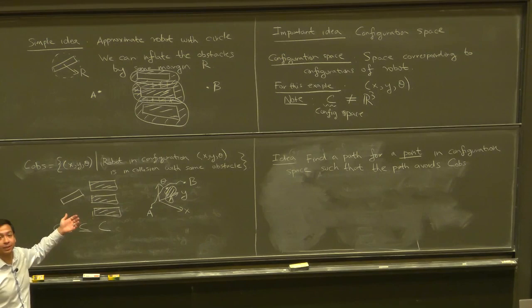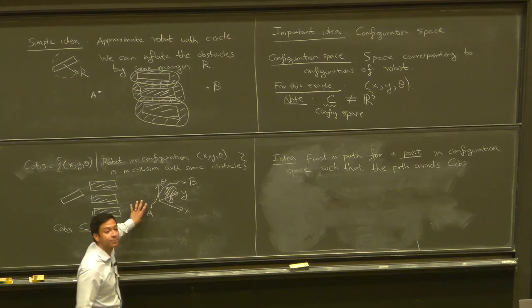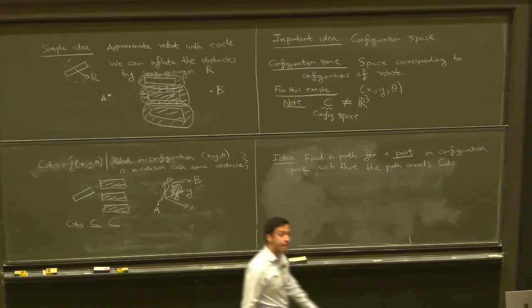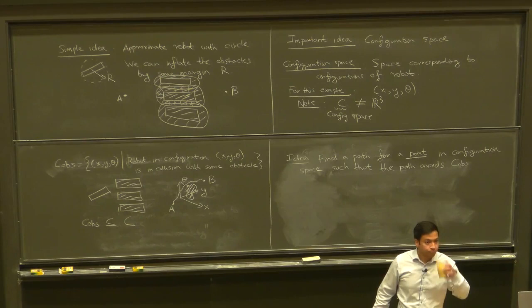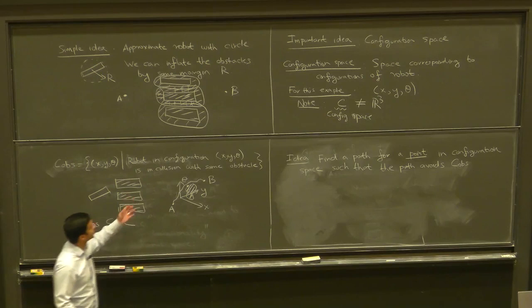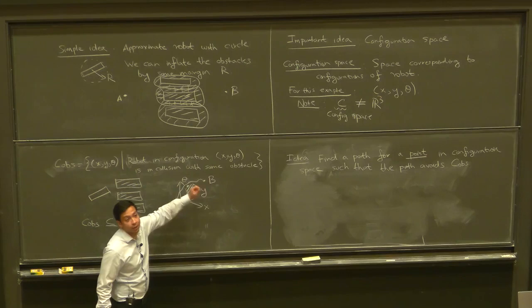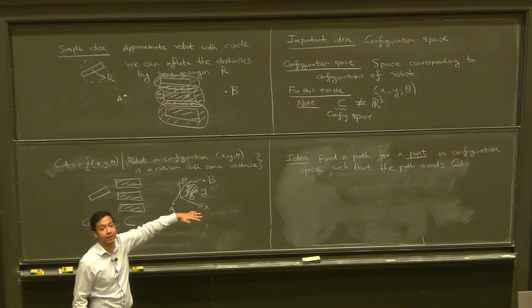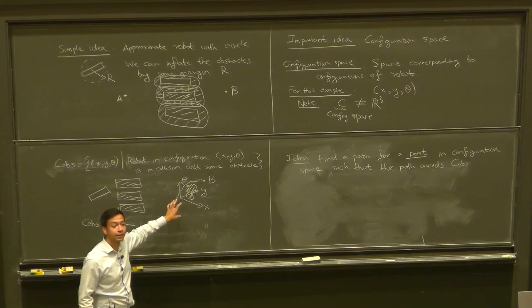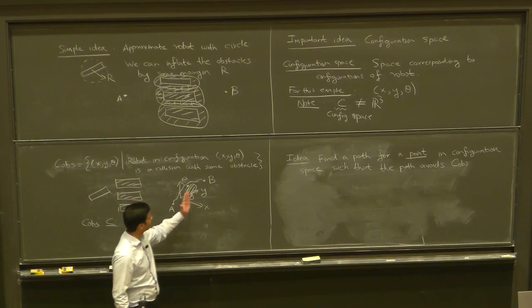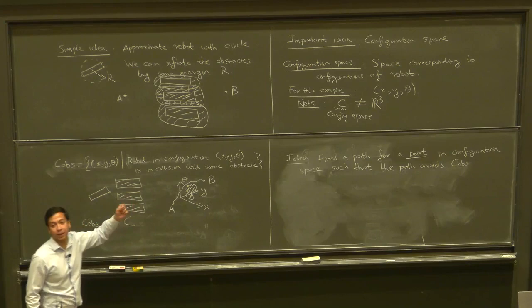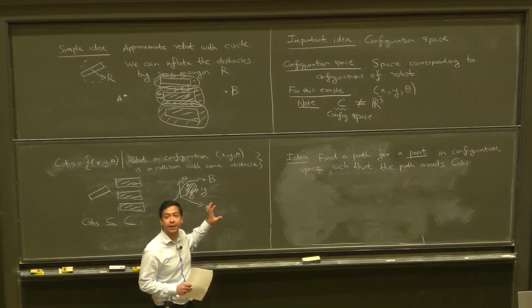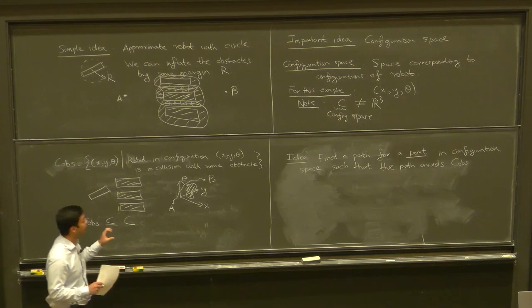The advantage of thinking about things this way is we've reduced our problem of doing motion planning while accounting for the robot's geometry into planning for a point robot. The idea is to find a motion plan — a path for a point in configuration space — such that the path avoids C_obs. There's some starting configuration A, a goal configuration B, and we want to find a path in configuration space that avoids the obstacle set. This is a really important idea.